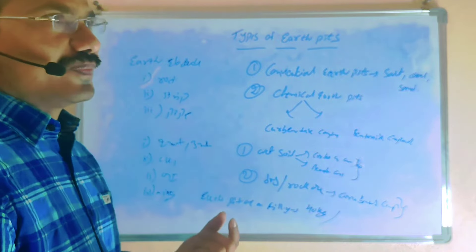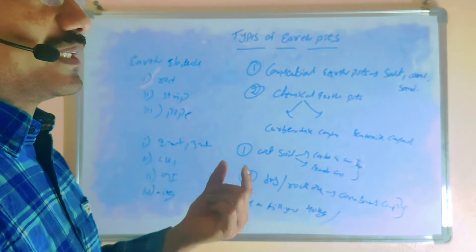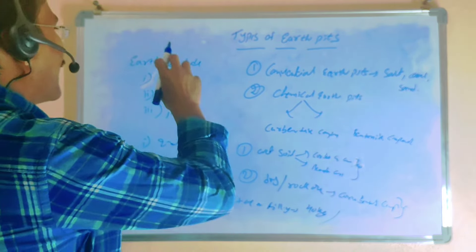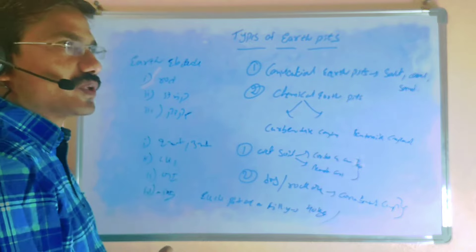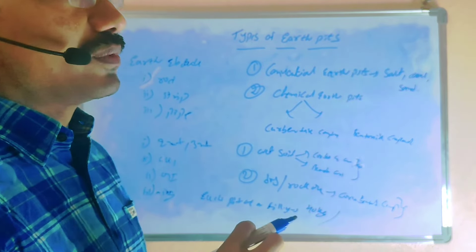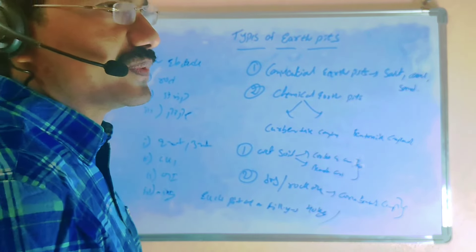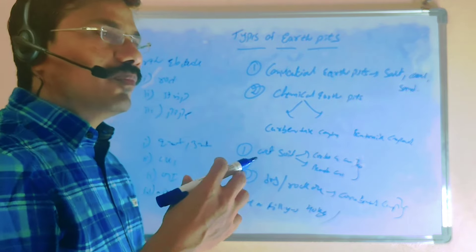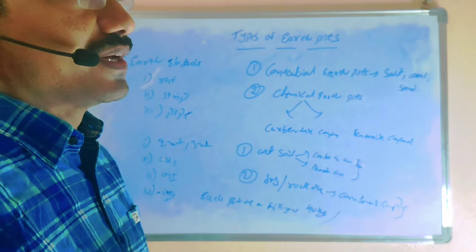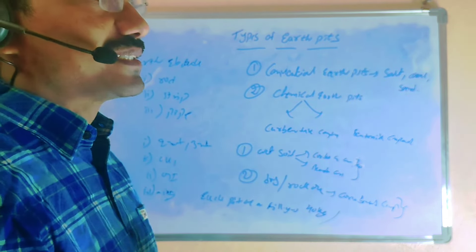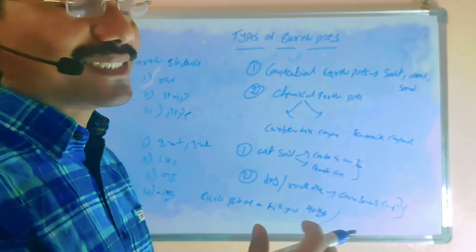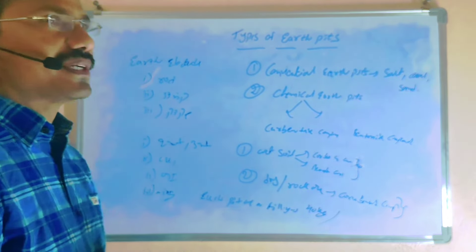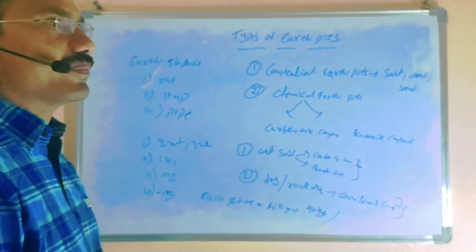The neutral strip is connected to the earth pit using nuts and bolts. These nuts and bolts are brass items or stainless steel material. We are using stainless steel material because it will give more lifetime.